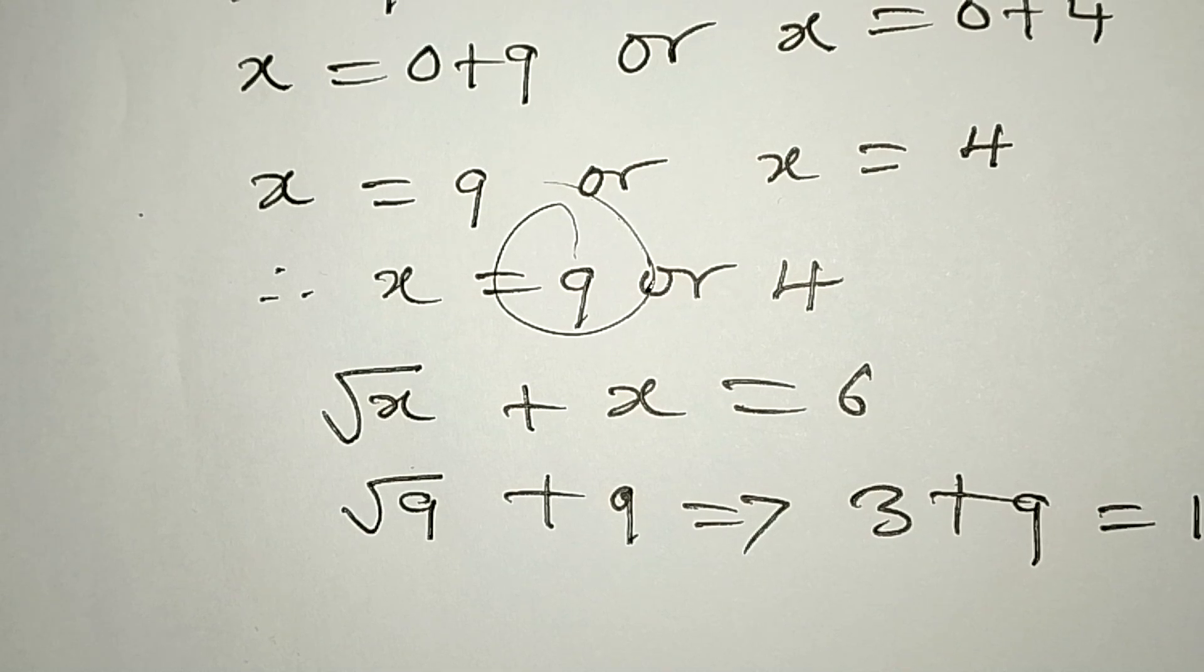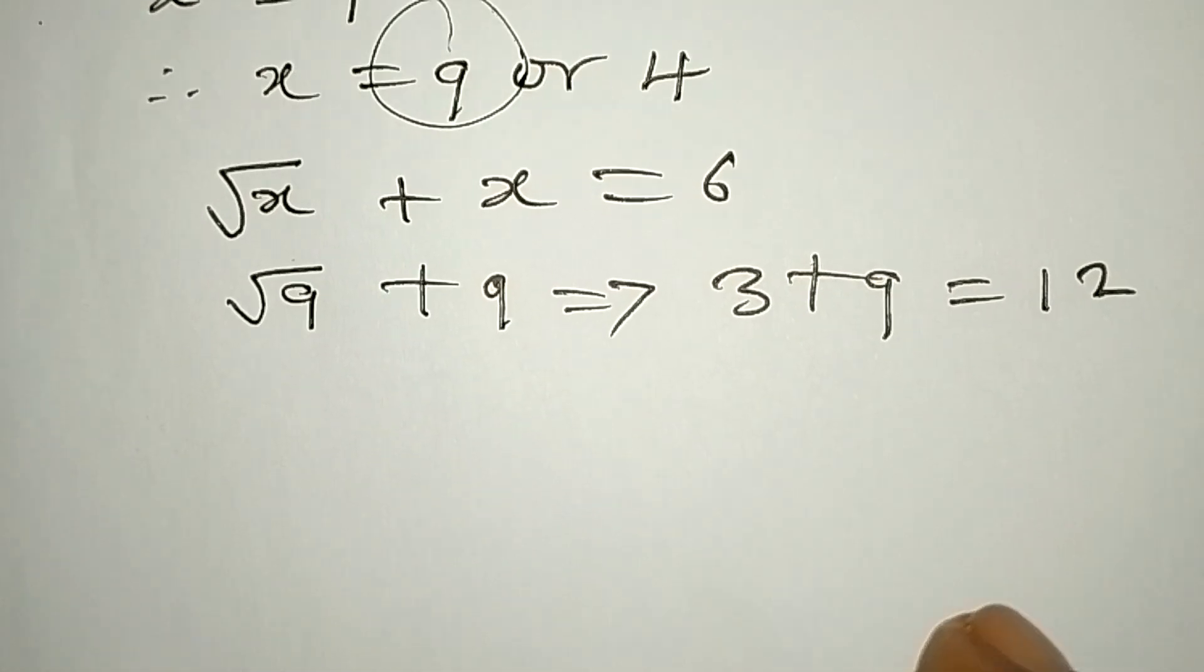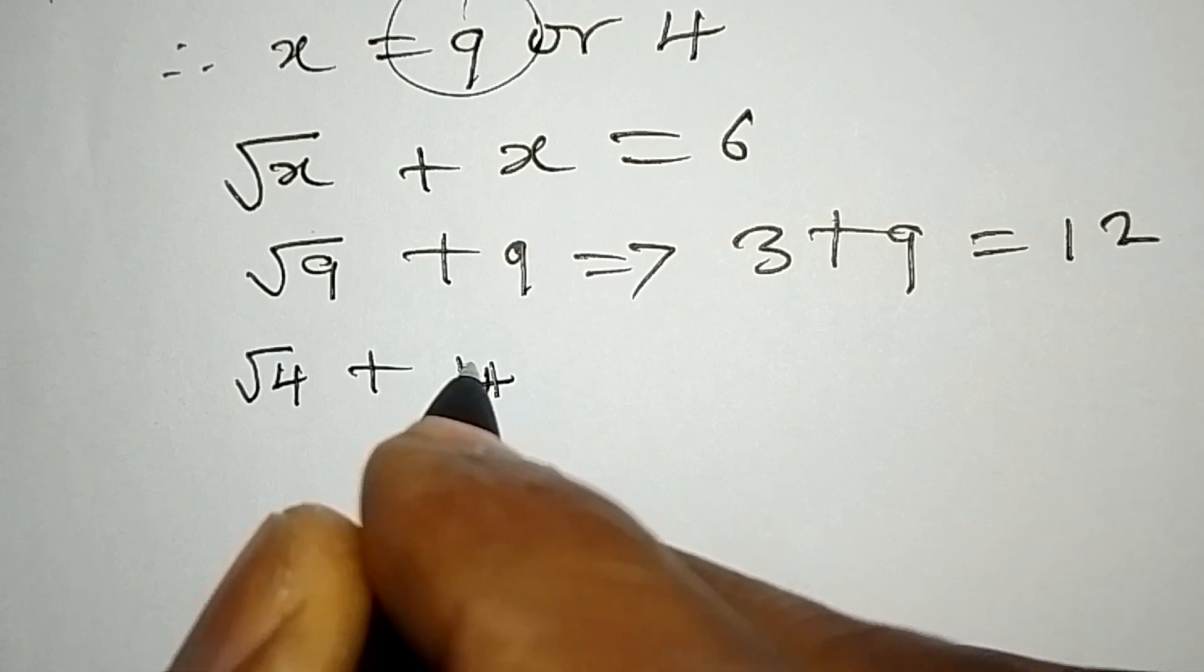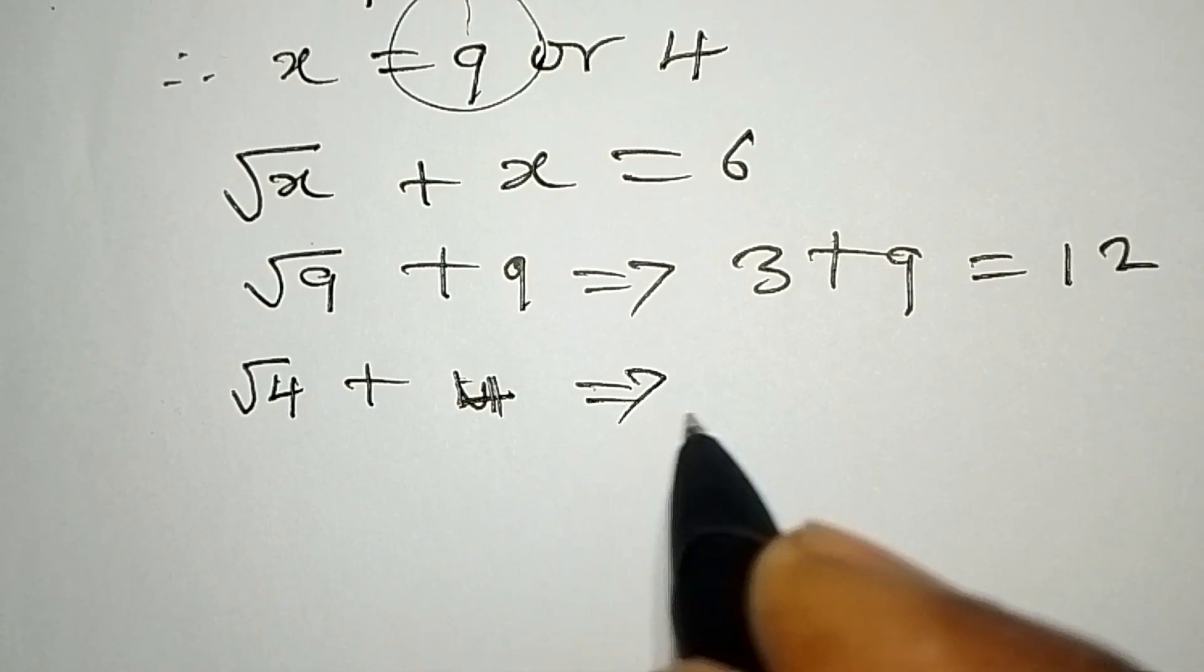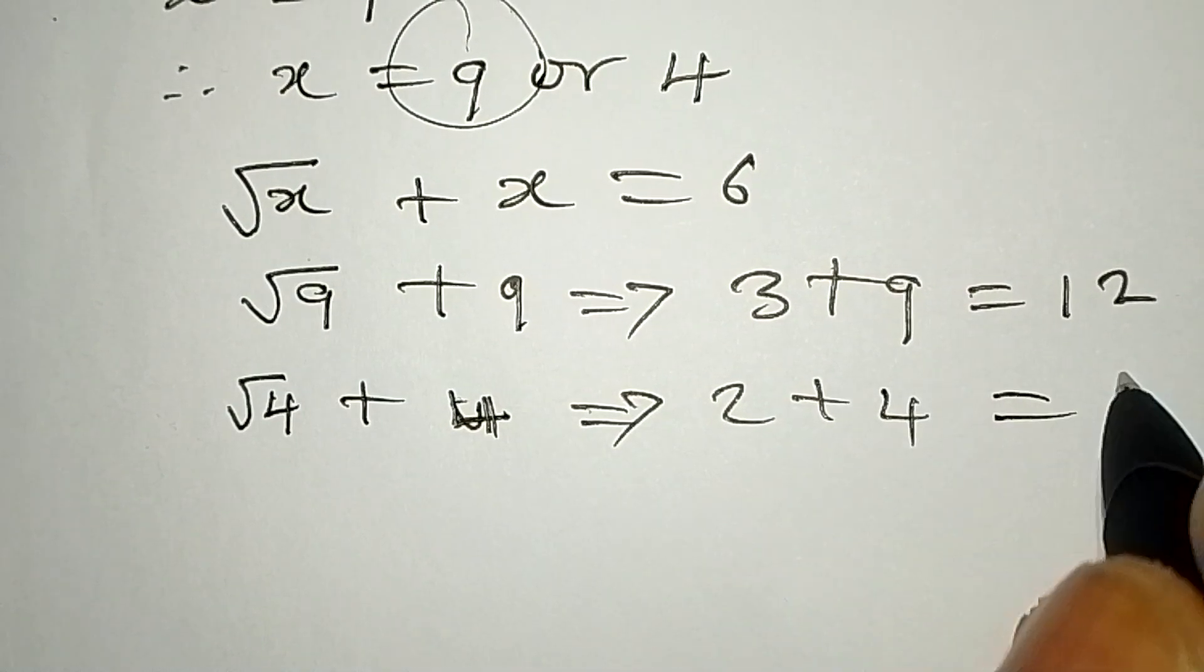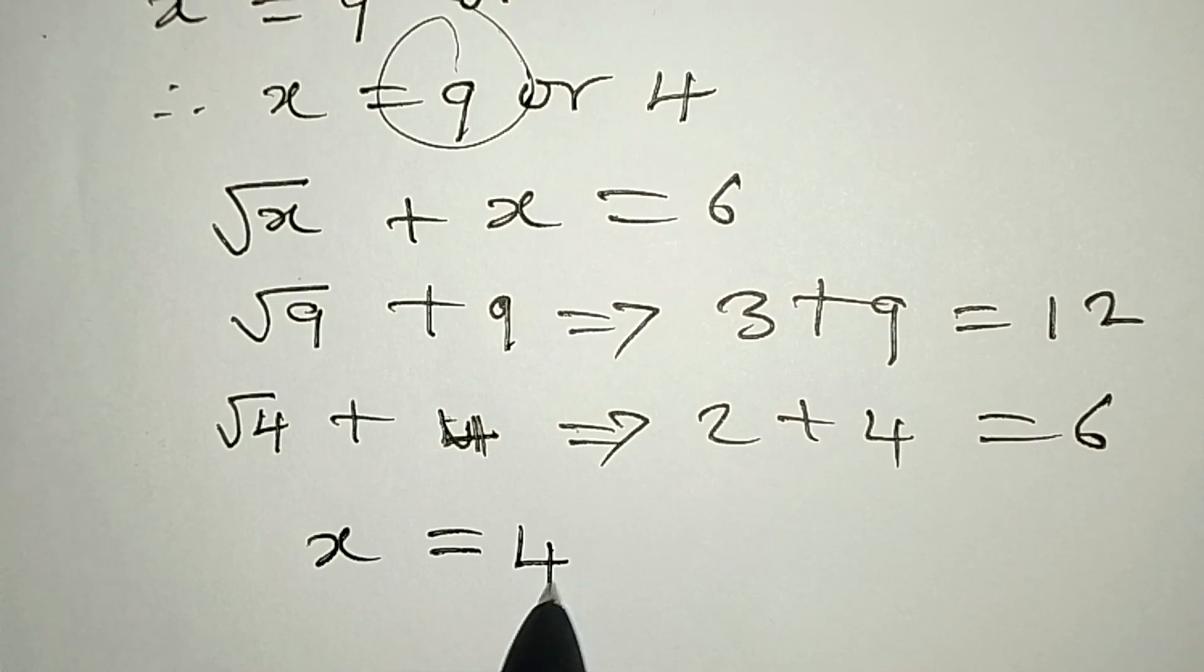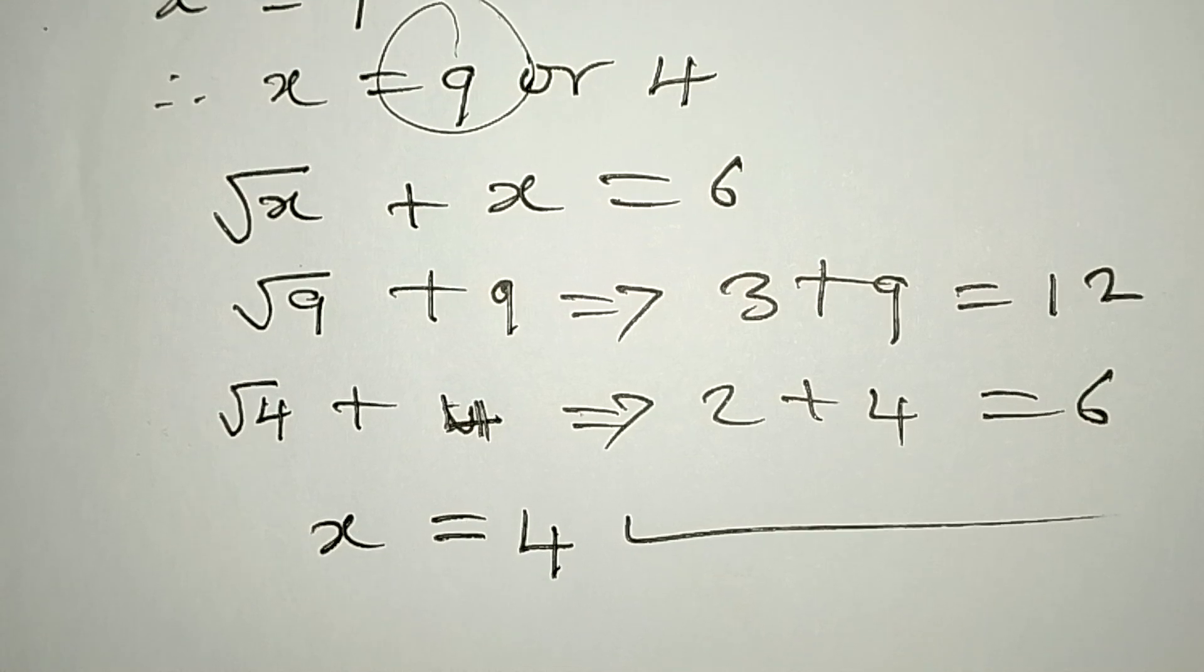Now let's pick x = 4. We're going to have √4 + 4, which implies we have 2 + 4, and 2 + 4 = 6. So this confirms that x = 4 is the solution to the problem. Thank you for watching.